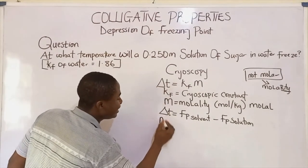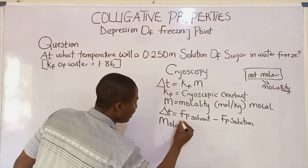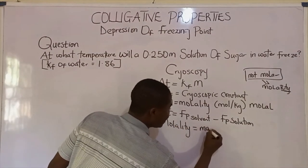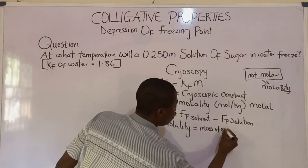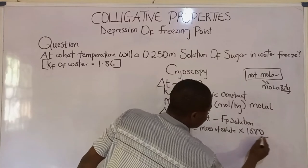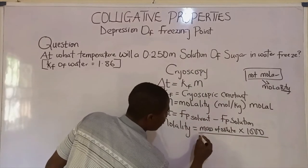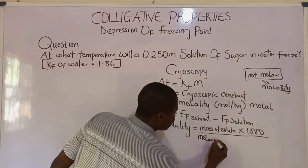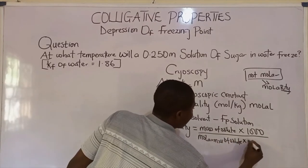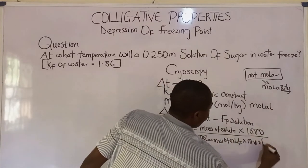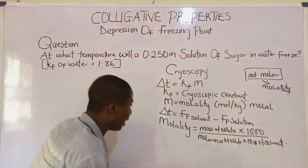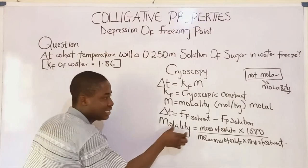Molality, which is m, is given by an equation which is: mass of solute times 1,000, all over molar mass of solute times mass of solvent. This is the formula for molality.